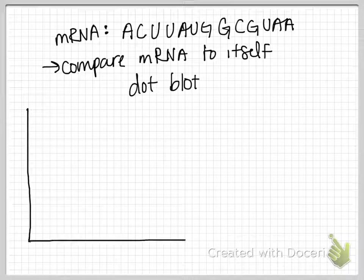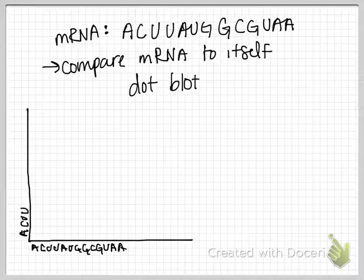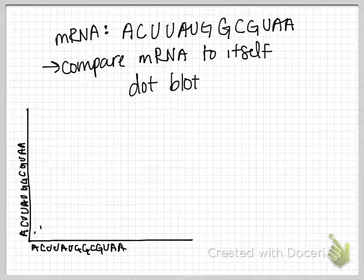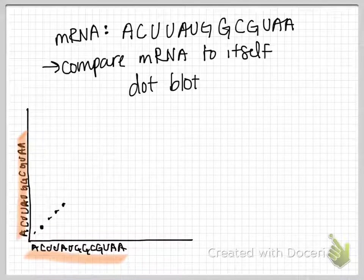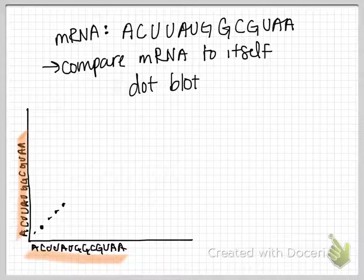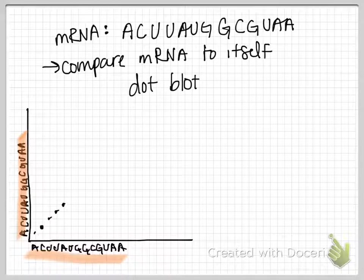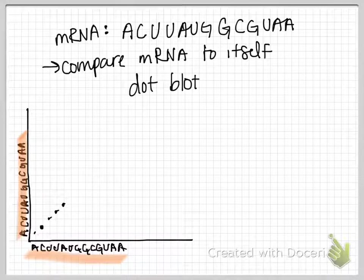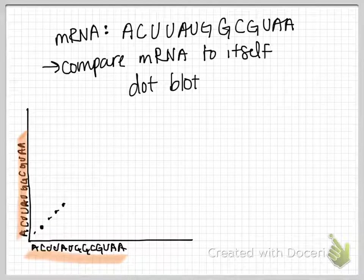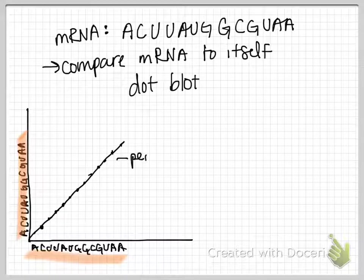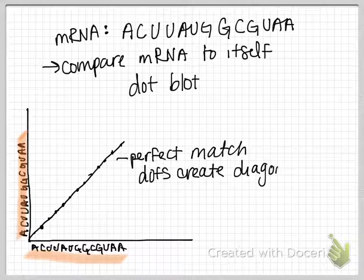So a dot blot is just a graph where on each axis is the sequence that you're going to compare. In this case it is the same two mRNA sequences that I've written on either side. A dot blot basically utilizes programming to compare where those two things are the same. And if you have the same base, then it puts a dot at that position. Since these two sequences are exactly the same, you get a perfect match for the dot blot, which is a perfect diagonal.